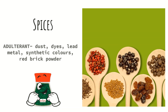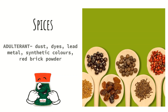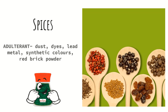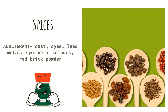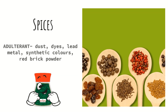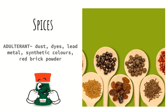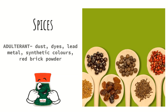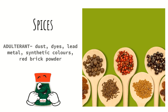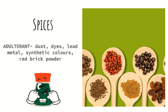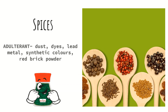Next we have spices — the adulterants used in spices are commonly dust, synthetic dyes, colors, lead metals, and red brick powder in chili. The diseases caused due to them are abdominal contractions, cancer, food poisoning, and metal toxicity.